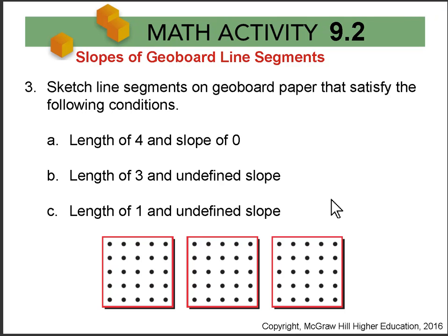Then for Question 3, we ask you to sketch line segments on the geoboard that satisfy the following conditions: Length of 4, slope of 0. Length of 3, undefined slope. Length of 1, undefined slope. And again, you might have multiple correct line segments.